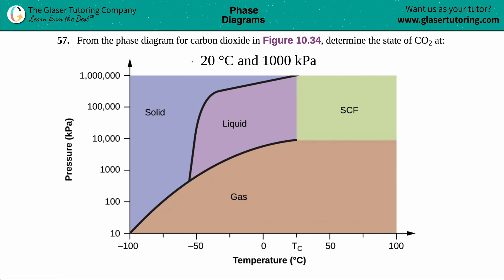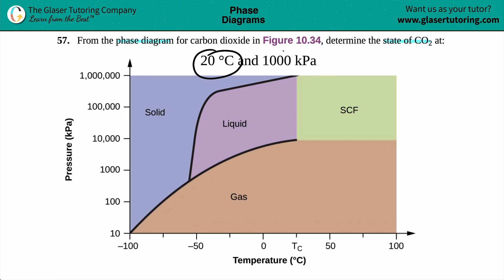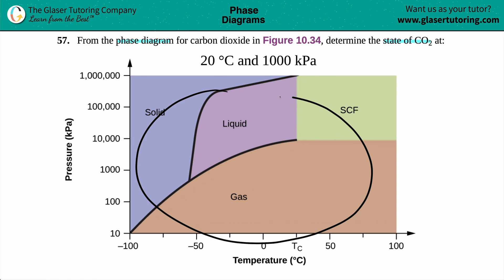Number 57: from the phase diagram for carbon dioxide in figure 10.34, determine the state of carbon dioxide at 20 degrees Celsius and 1000 kilopascals (kPa).